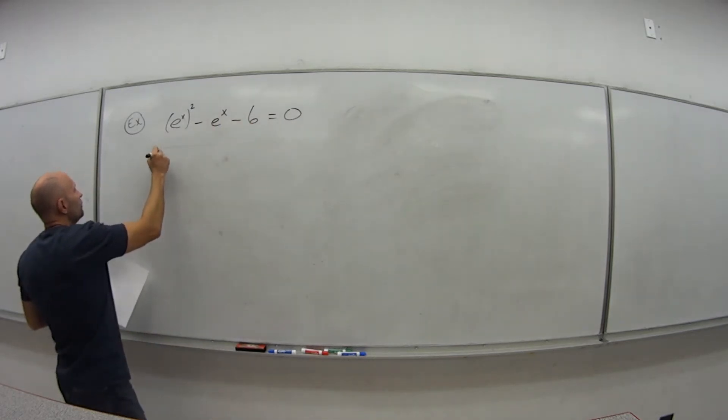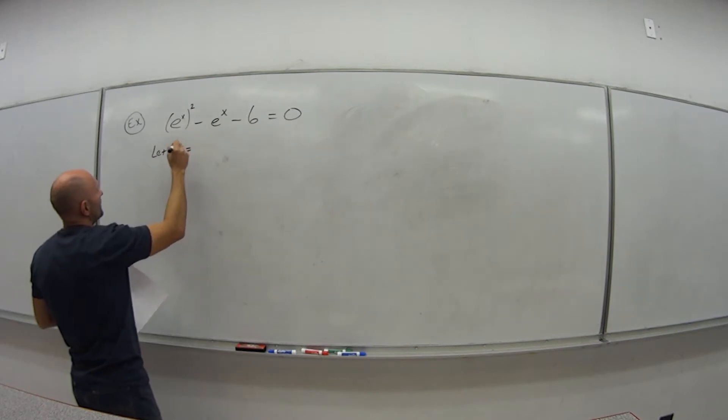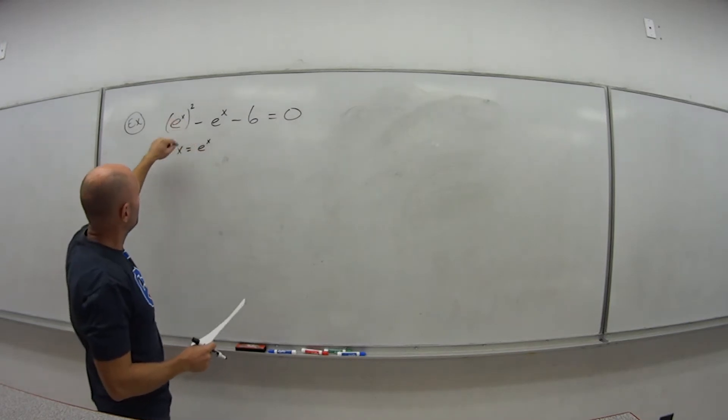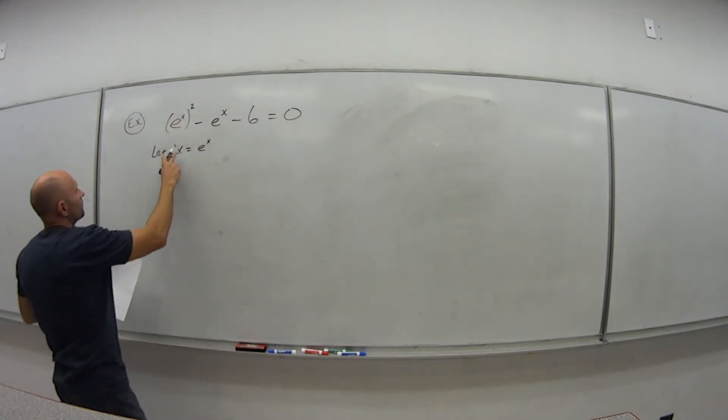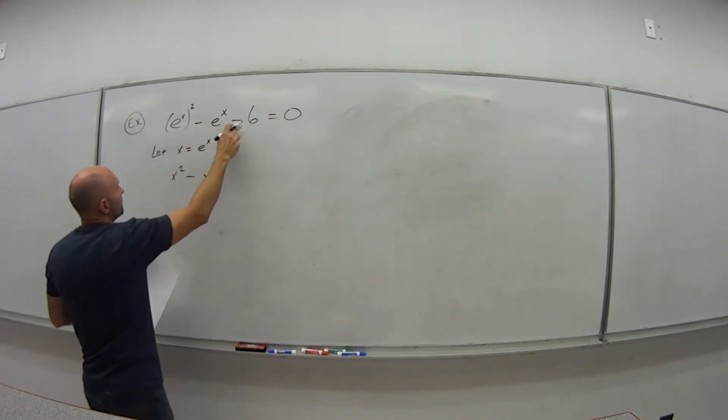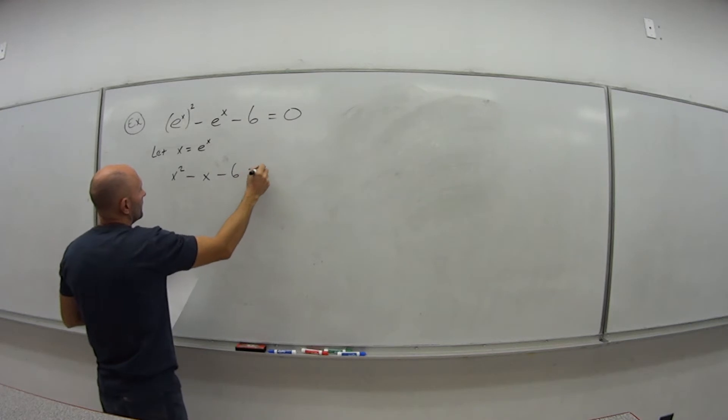So if you want to use substitution in this, we're going to say let x equal this function e to the x. So anywhere I have an e to the x, plug in an x instead. So I get x squared minus e to the x, which is just x, minus 6 equals 0.